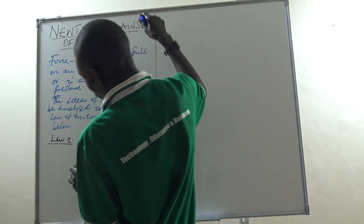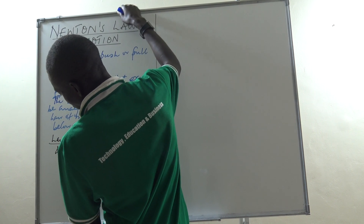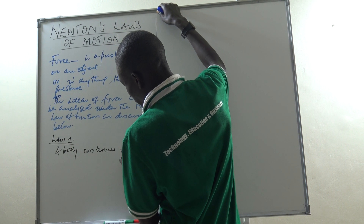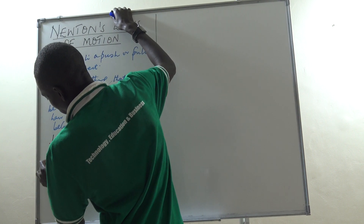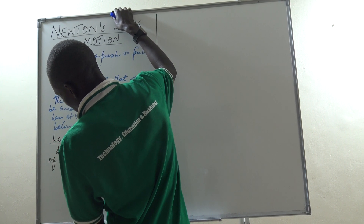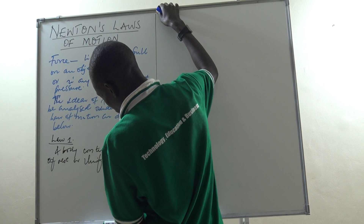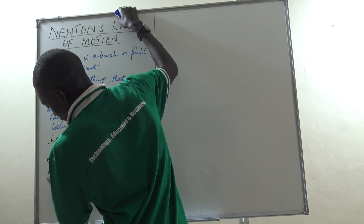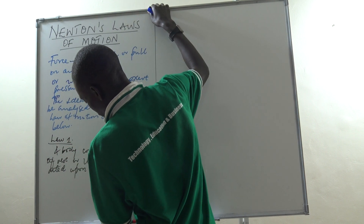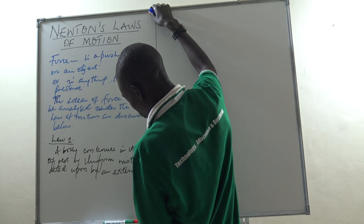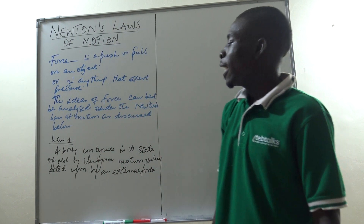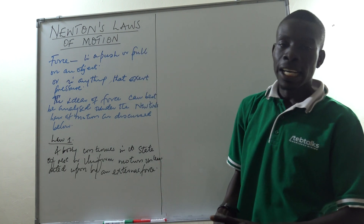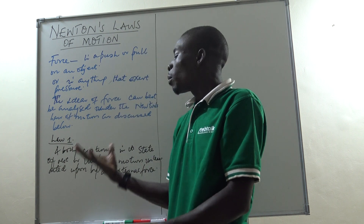Newton's first law of motion states that a body continues in its state of rest or uniform motion unless acted upon by an external force. From this, we realize there are two things: the body will either tend to remain at rest, or it will continue moving, unless an external force acts on it.